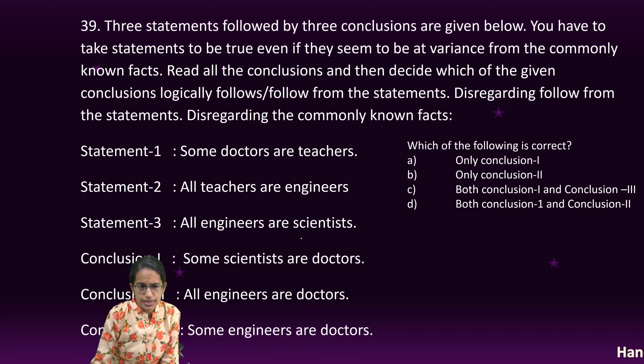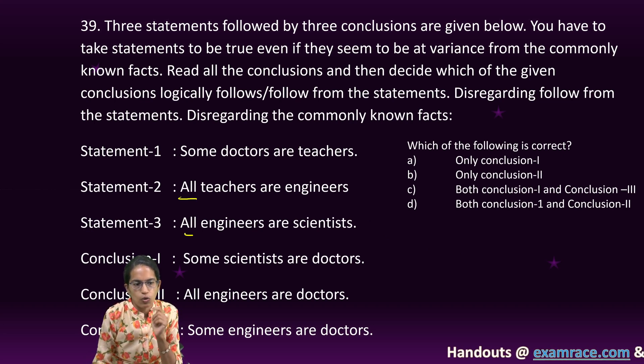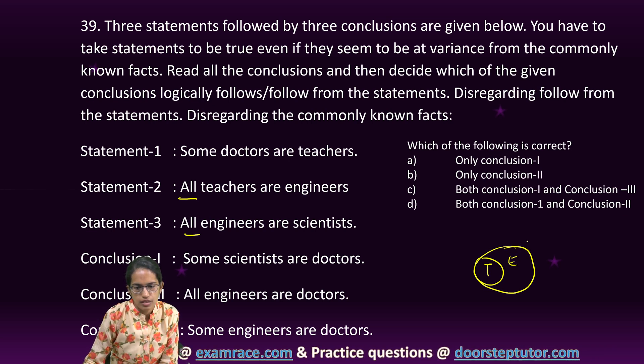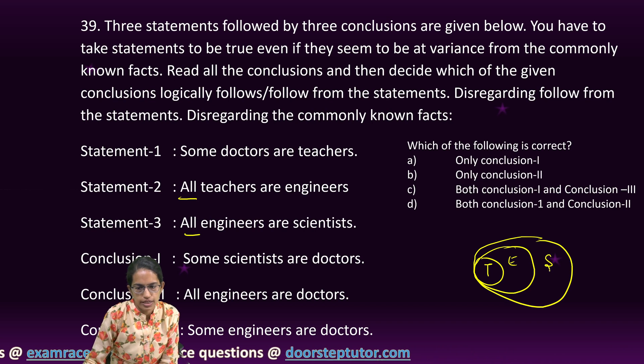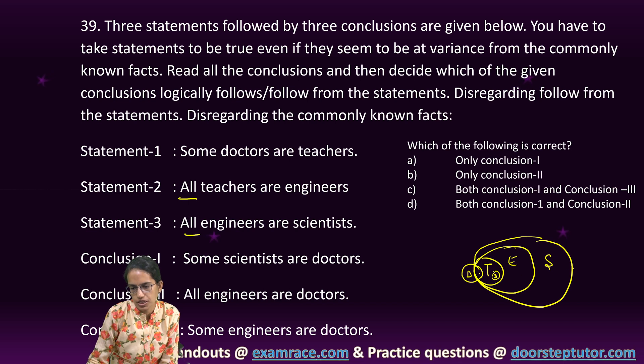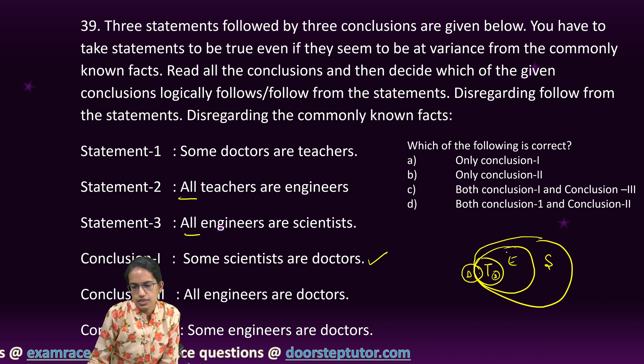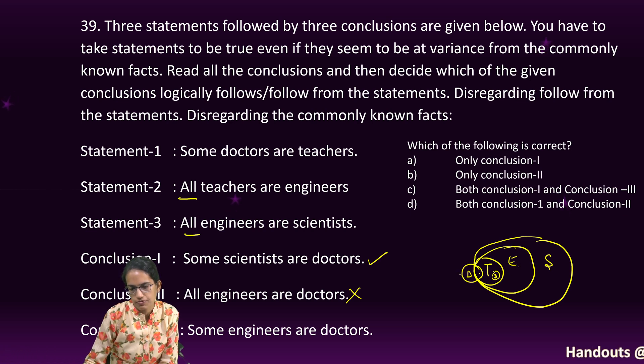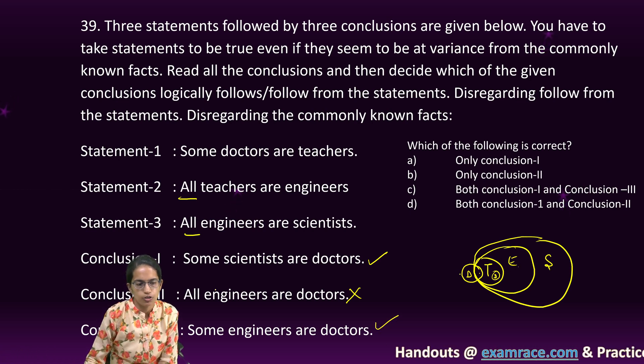The next question. Again, a similar type of question. So, I will go by the all ones first. All teachers are engineers. And all engineers are scientists. I have some doctors who are teachers. Now, some doctors who are teachers can be here. Or some doctors who are teachers can be here. Based on this, I can say some scientists are doctor definitely. Some scientists could be doctor. Because either here it is or here it is. Some of them would be scientists. So, this is correct. All engineers are doctors. That is incorrect. Definitely not. Seeing the Venn diagram. Some engineers are doctor. Is correct. Even if the doctors are here or here. Some engineers would be doctors. So, conclusion one, 1.